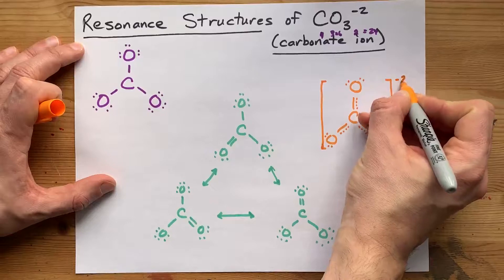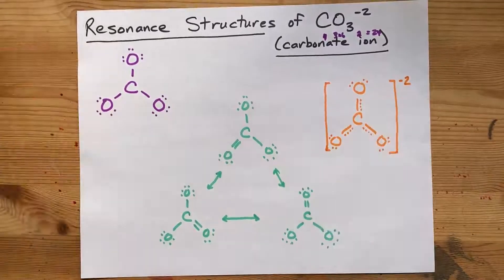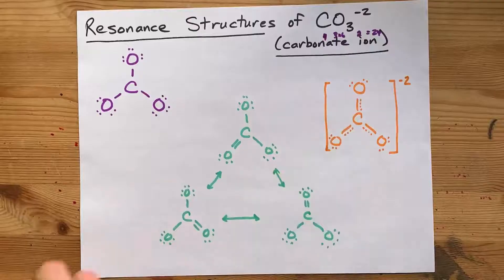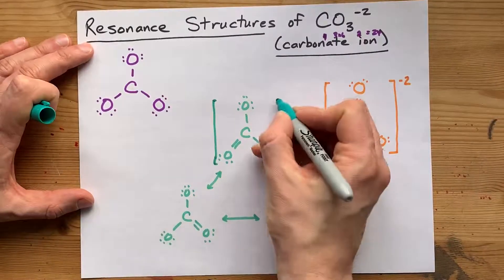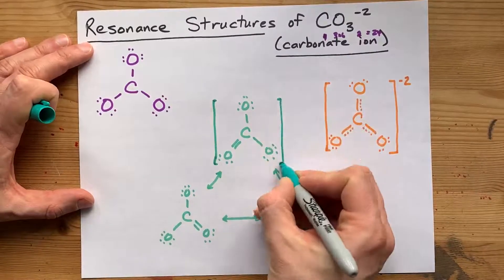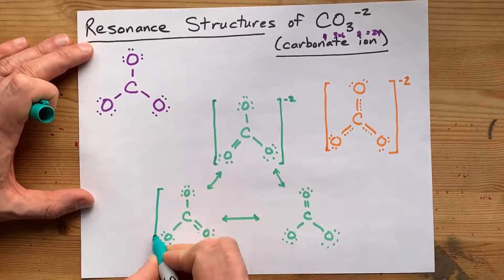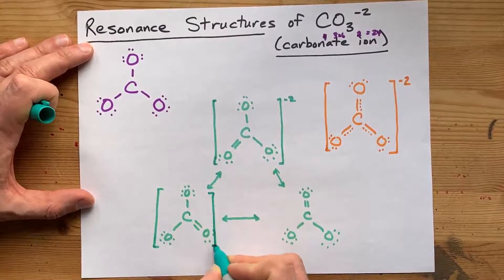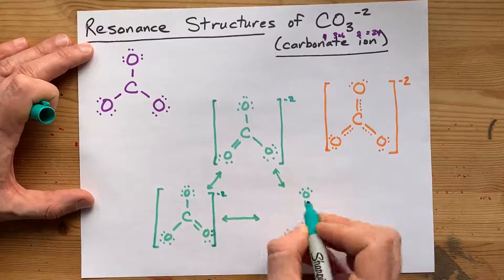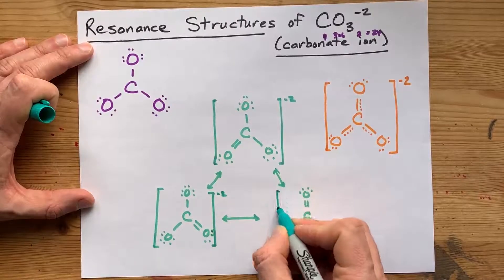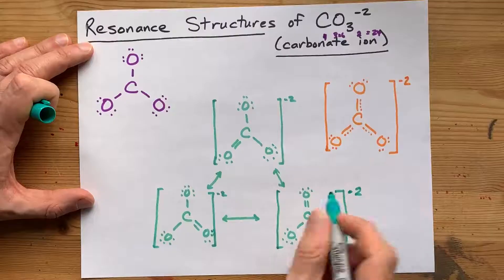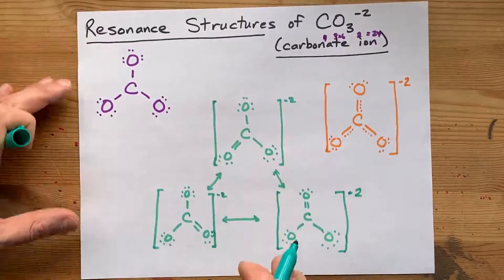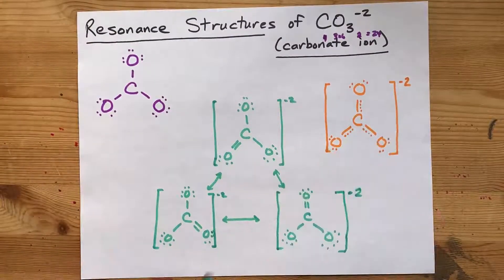The only other thing I'm doing here is adding square brackets with the charge in the top right corner. The reason is Lewis structures for ions need square brackets with the charge written. So I'm just going to finish that off here — I almost went straight over my electrons there. There we go. That shows the three resonance structures for carbonate and the resonance hybrid.